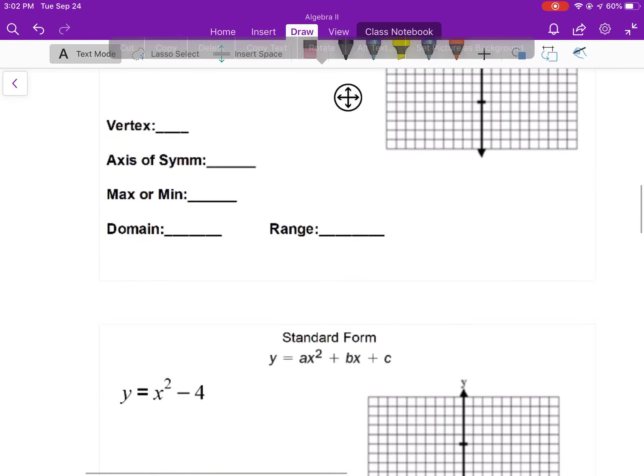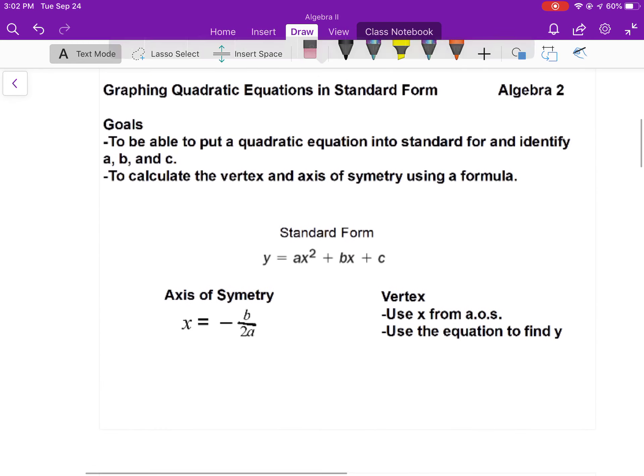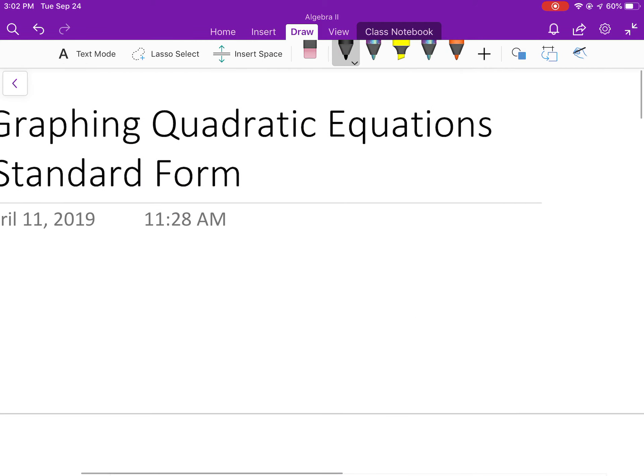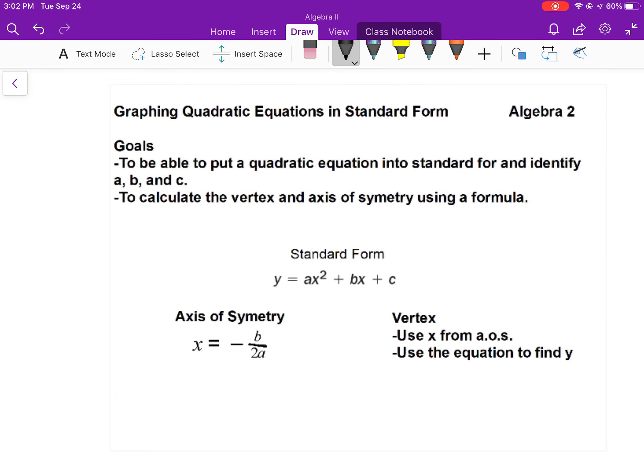Remember that a cannot be zero. If a was zero, then you would end up getting rid of any quadratic that you had, and you no longer have quadratics. So that's why that's always there. You have an axis of symmetry formula. It is negative b over 2a.